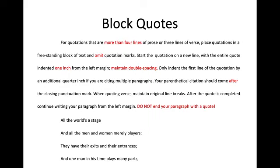Block quotes from Shakespeare can be tricky. If you want to quote more than four lines of prose or three lines of verse, you're going to place those quotations in a freestanding block of text with no quotation marks. The quotation starts on a new line, and the entire quote is indented one inch from the left margin. Maintain double spacing. If citing multiple speakers — say Othello speaks one line, Desdemona has two lines, and Othello returns — you'll need to indent those lines to indicate new speakers.